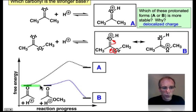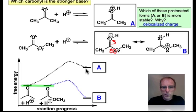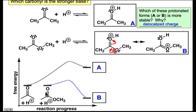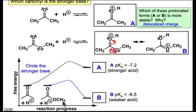We'll put the neutral species at the same energy because charge is the greatest contributor to energy, and these neutral species are very similar. But it's the difference in stability between the protonated forms — A being less stable and B being more stable — that really defines the basicity of these two groups. There is a favorable driving force for protonating the ester, and we conclude that the stronger base is the ester functionality. This is revealed in the pKa's of these conjugate acids.